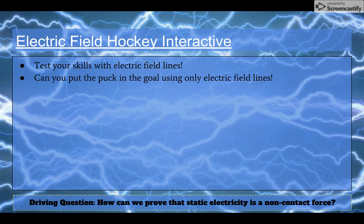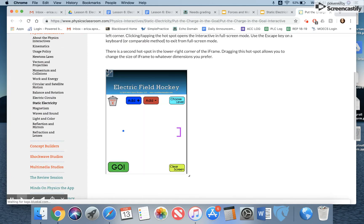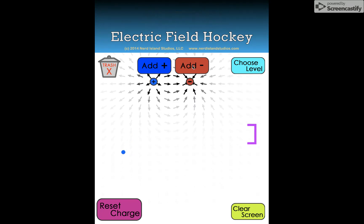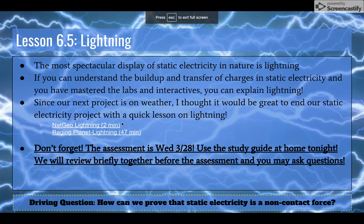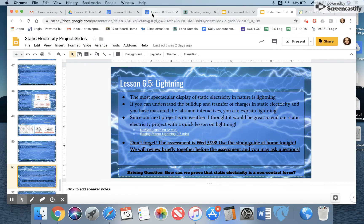If you're interested, this field hockey interactive will give you a chance to play around with different field lines. This is at the physics classroom. You can add different charges into the field and try to get the little blue dot to go into the goal. If you're bored today, that's fun - you can add in different fields.